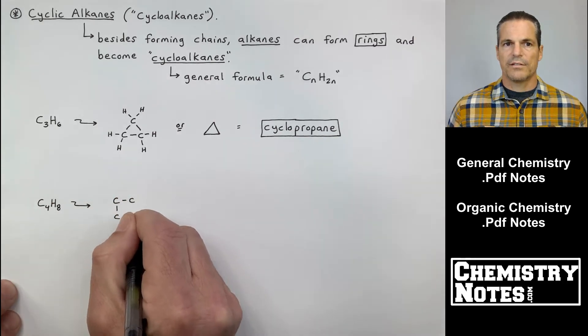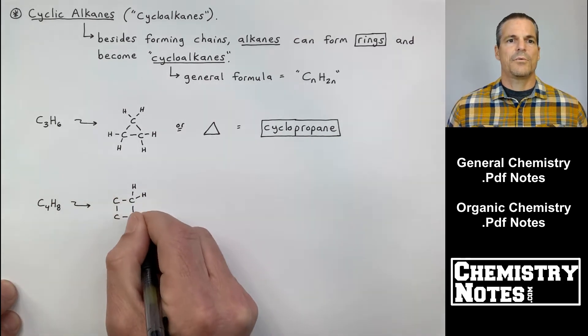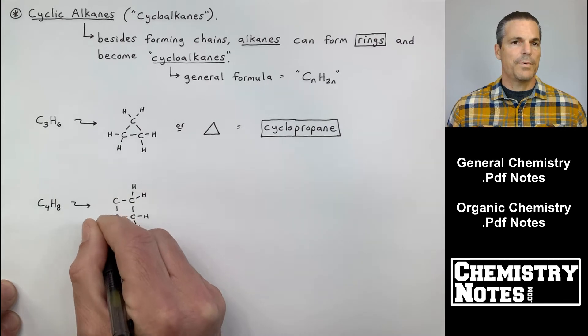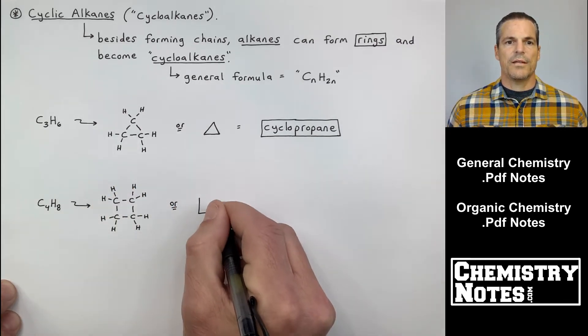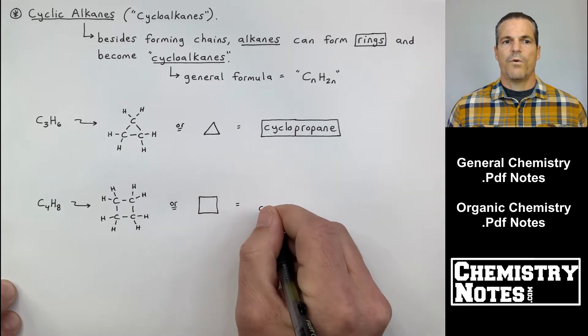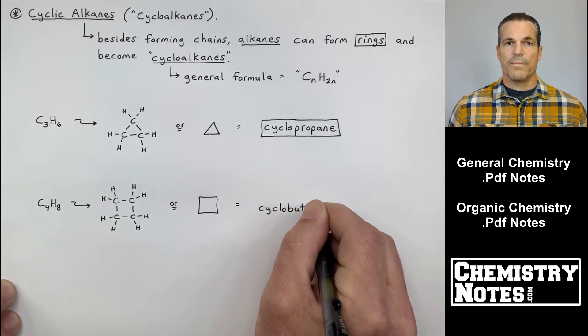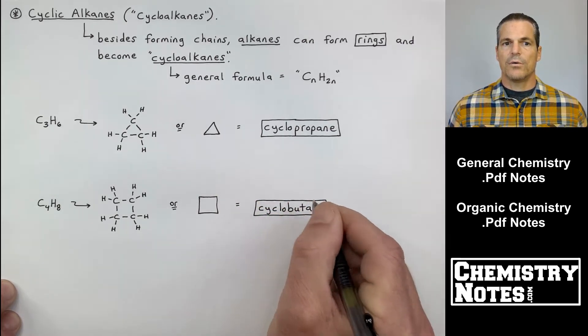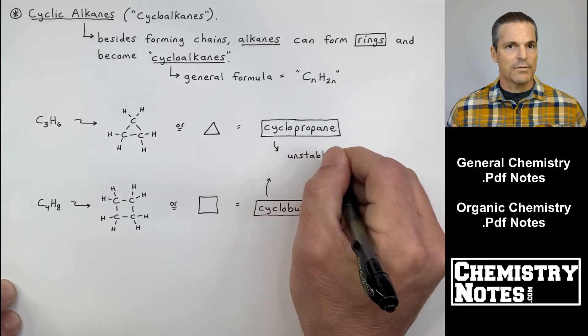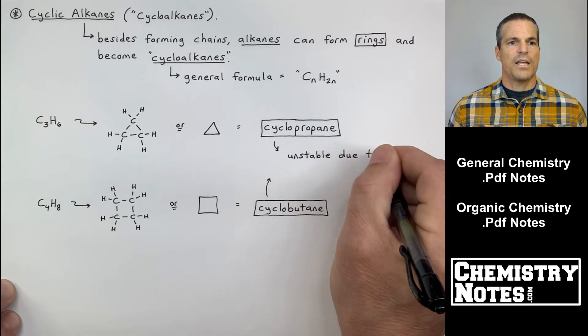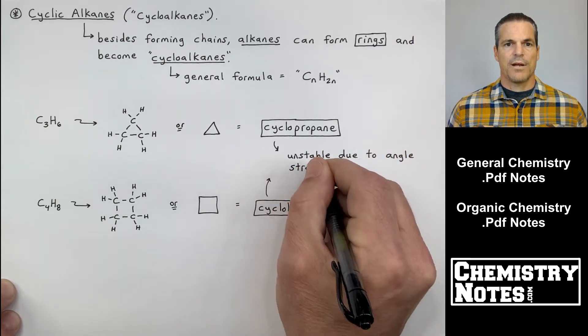C3H6, you can't have a ring until you get the three carbons. C3H6, this is not propane, but cyclopropane. Two ways to draw it are shown. Four carbons is cyclobutane. So C4H10 was butane. C4H8 is cyclobutane.